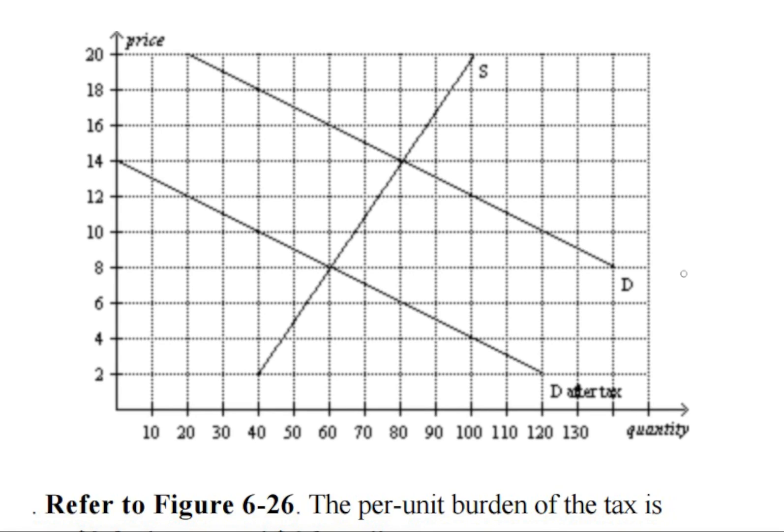So the question wants to know what is the per-unit burden of tax on the buyer and the seller. We start off by identifying where the old equilibrium point was, or the original equilibrium point.